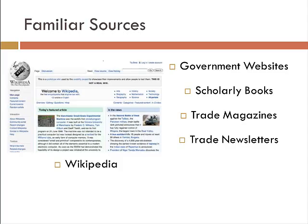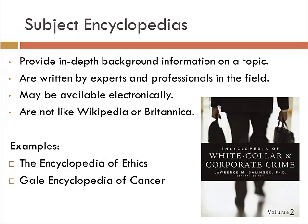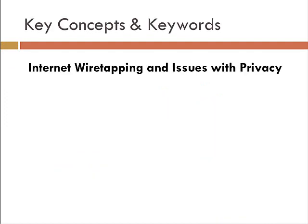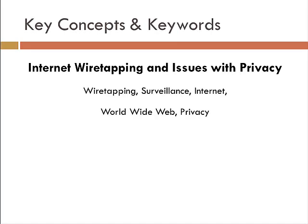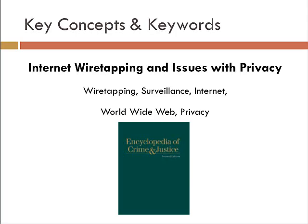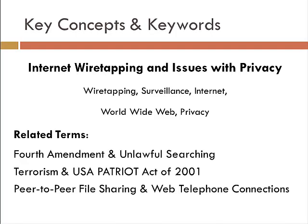You may want to look at more scholarly, subject-specific encyclopedias. These are available through the library and provide background information, but they're written by experts and heavily edited. Using such an encyclopedia, I might consider my topic — wiretapping on the internet. After investigating the Encyclopedia of Crime and Justice and other encyclopedias, I actually found related terms, such as the Fourth Amendment and unlawful searching, which is one of the key ways people argue against wiretapping.